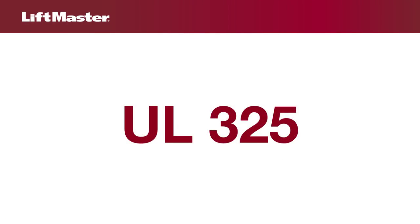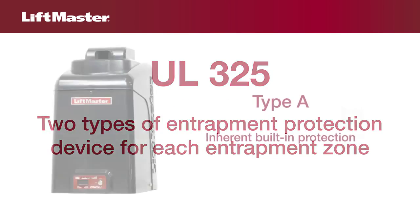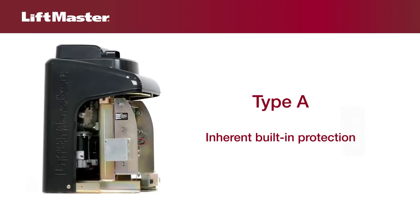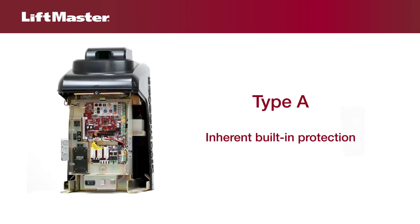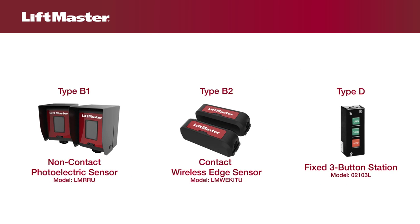UL325 requires that gate installations must have at least two independent entrapment protection devices for each entrapment zone. Type A is inherent protection built into the operator. Type B1 is a non-contact sensor, such as a photoelectric sensor. Type B2 is a contact sensor, such as an edge sensor. Type D is a fixed three-button station.